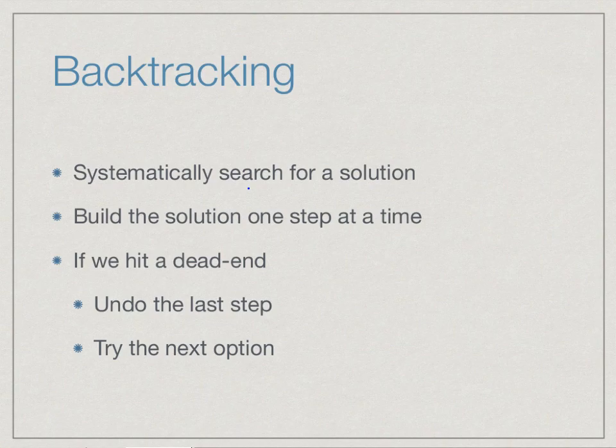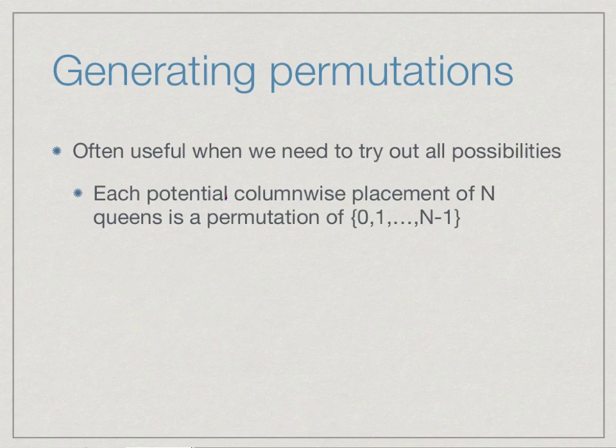We have been looking at backtracking. In backtracking, we systematically search for a solution one step at a time. When we hit a dead end, we undo the last step and try the next option. In the process of doing backtracking, we need to generate all the possibilities. For instance, when we try to print out all queens, we run through every possible position for every queen on every row. If it was free, then we tried it out, and if the solution extended to a final case, then we printed it out.